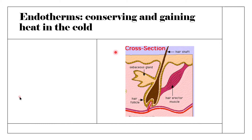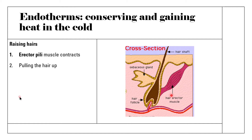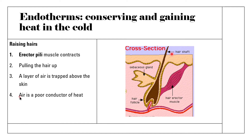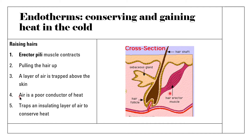Another way to conserve heat in the cold is by raising hairs. The erector pili muscle contracts, pulling the hairs upright. This traps an insulating layer of air above the skin. Because air is a poor conductor of heat, this insulating layer helps conserve heat — we don't lose heat as easily when our hairs are raised.